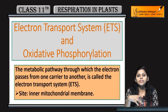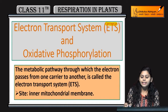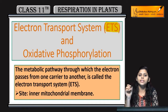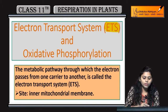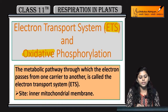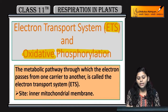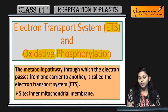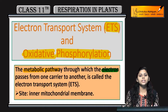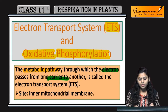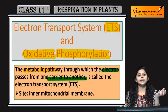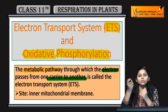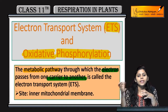The next step is electron transport, which happens by ETS or electron transport system. Along with this, oxidative phosphorylation occurs — in this, oxidation happens and a phosphate group is added. It is a metabolic pathway through which electrons pass from one carrier to another.